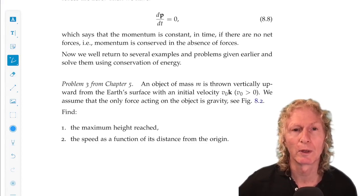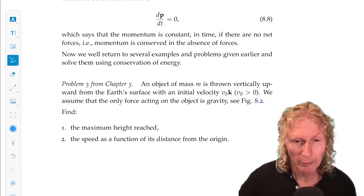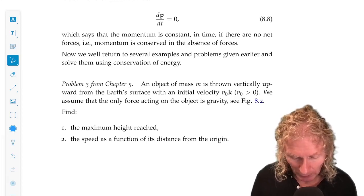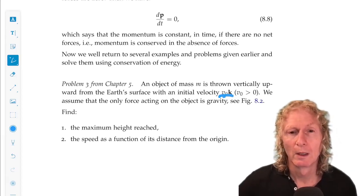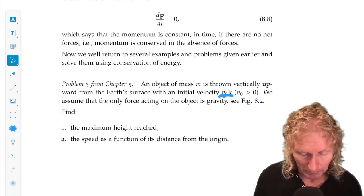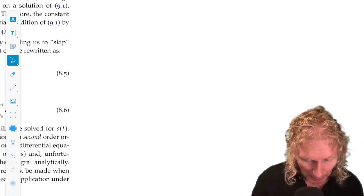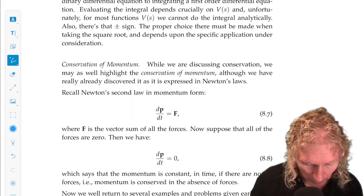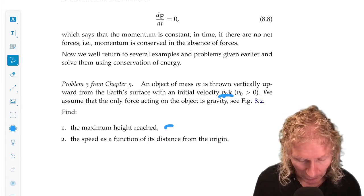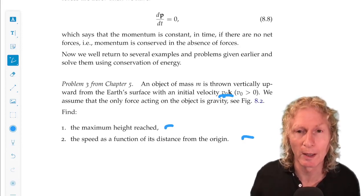This is a projectile problem from Chapter 5. So we have a particle of mass m. It's projected straight up from the Earth's surface with a velocity in the vertical direction, v naught, and the only force acting on it is gravity. We want to compute two things. One is the maximum height reached, and the other is the speed as a function of its distance from the origin, from the ground, from z equals zero.